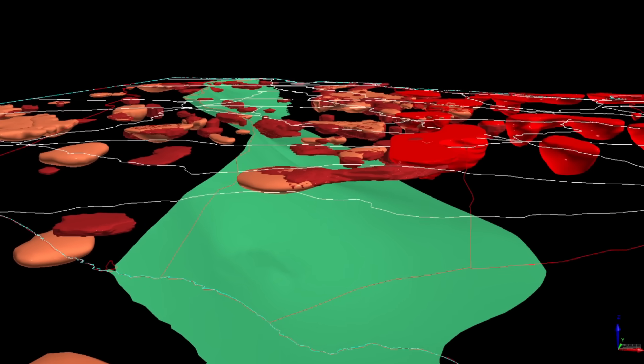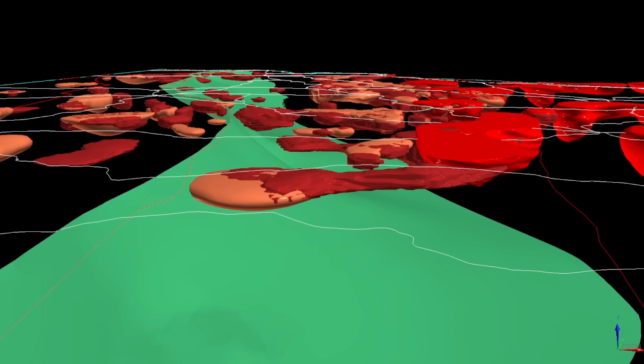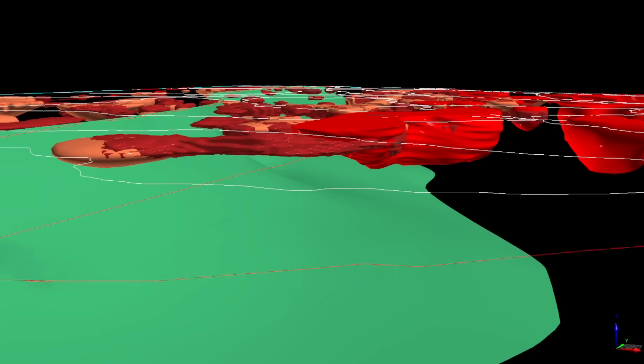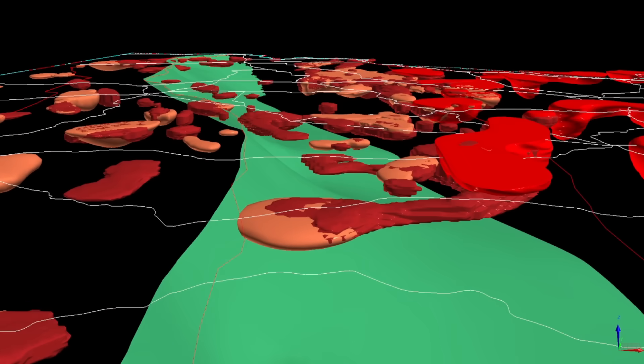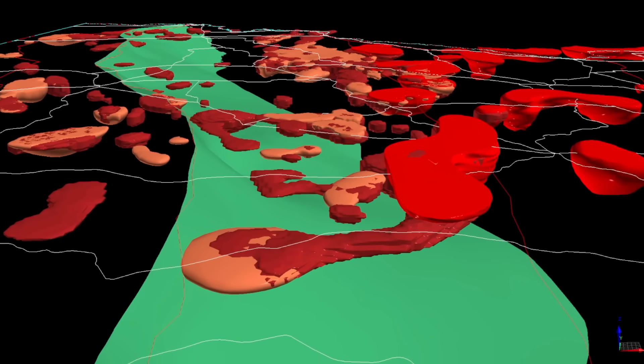Ancient structures never truly die. Magmatism follows memory, and even long-dead faults can shape the land above them millions of years later.